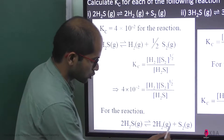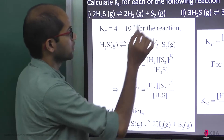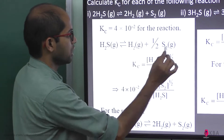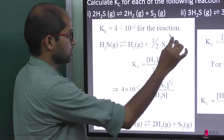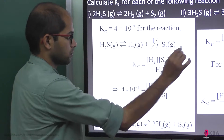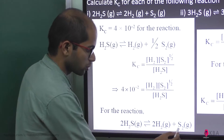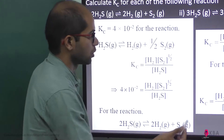For the first modified reaction: 2H₂S ⇌ 2H₂ + S₂. This is the original reaction multiplied by 2.